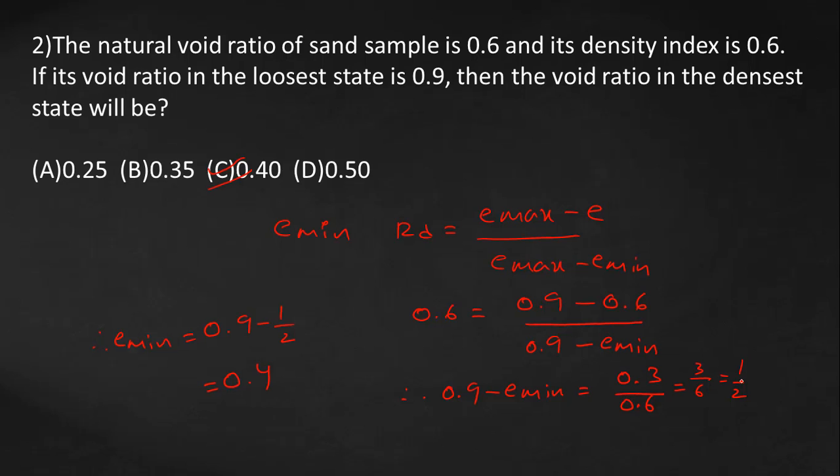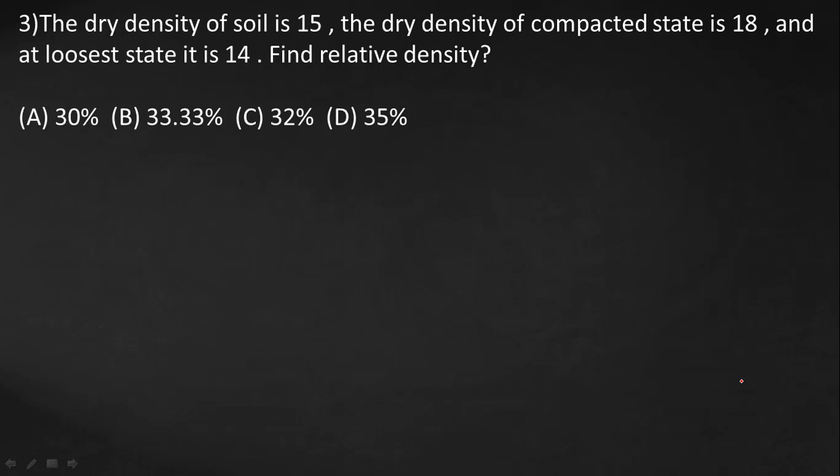Okay, next question. The dry density of soil is 15, the dry density of compacted state is 18, and loosest state is 14. Find relative density.